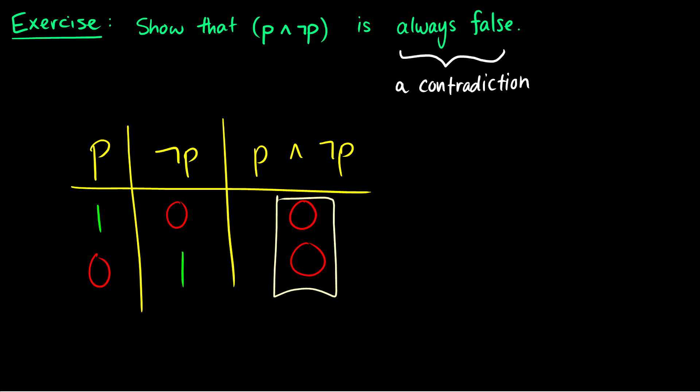So those are proofs using truth tables. This is different from proving using rules of inference, which we'll get to eventually, and also different from using logic laws to reduce statements, which is coming next. There are essentially three ways of proving things, and the most simple way is to prove using a truth table. Definitely find yourself some practice problems and work on these — if there are any questions, please do ask.